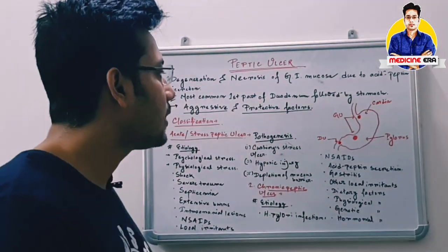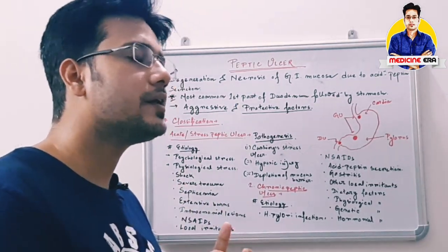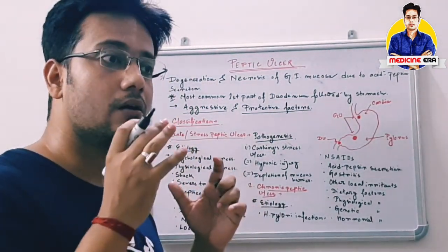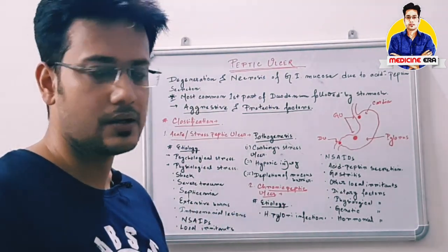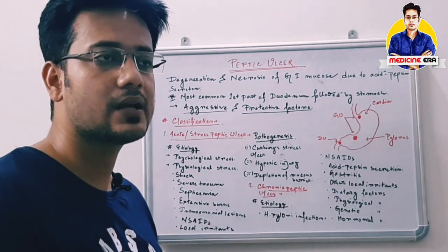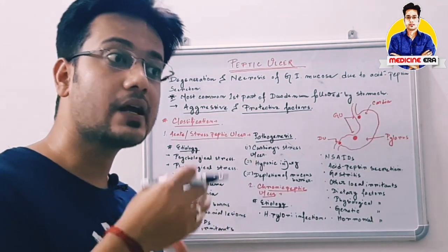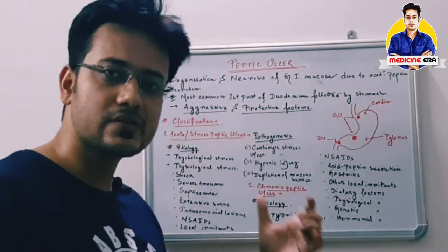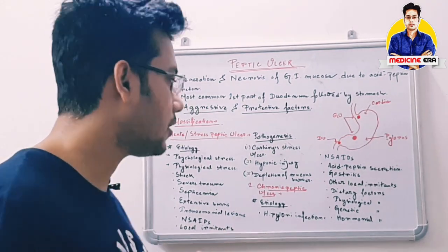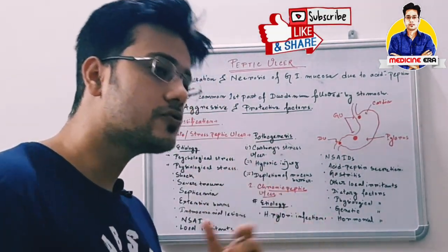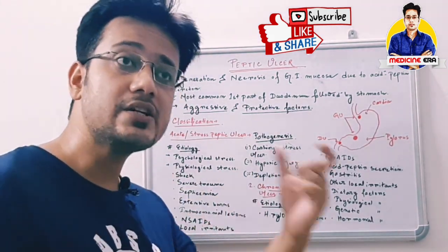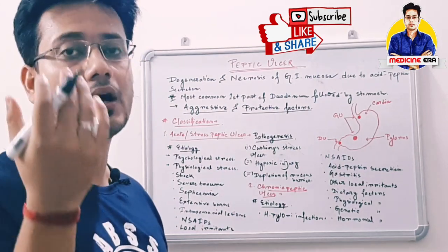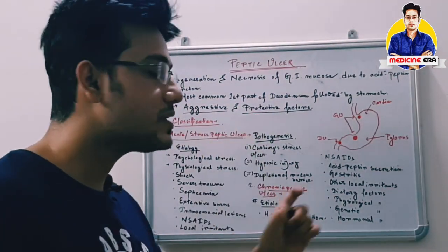Pathogenesis means how the disease progresses in the body. Cushing's stress ulcer refers to ulcer caused by any damage due to brain surgery, brain tumors, or intracranial lesions. Hypoxic injury occurs when oxygen deficiency — hypoxia or ischemia — causes cellular damage, also leading to peptic ulcer. Depletion of the mucus barrier allows HCL to contact the mucosal membrane, also causing peptic ulcer.